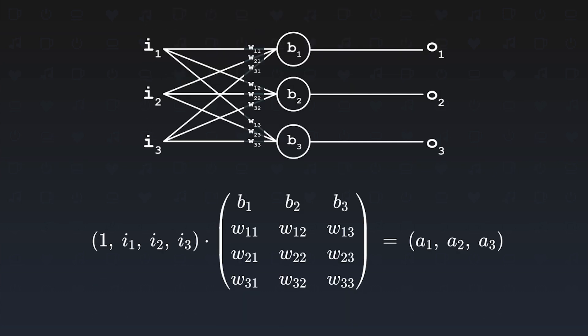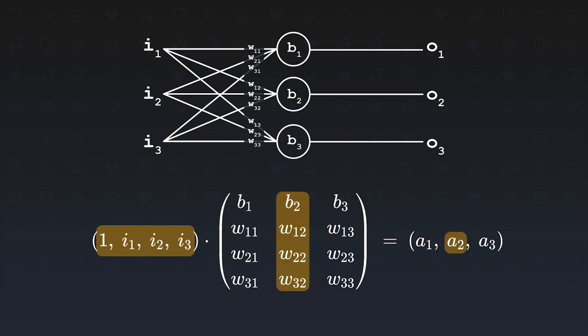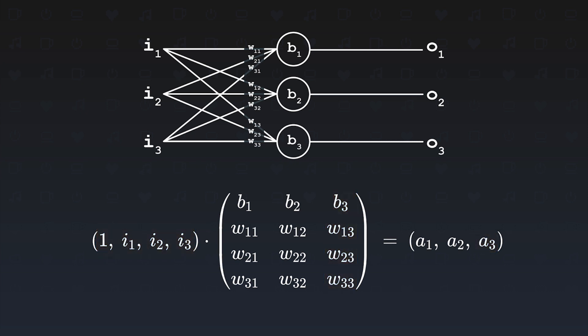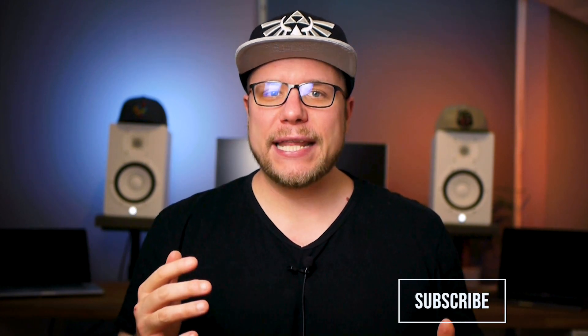And how does this apply to our layer of neurons? On one hand we have the input; on the other we have our matrix of weights and biases. We multiply this row of inputs with the first column in our matrix — neuron 1 — then with the second column, neuron 2, and finally with the third column, neuron 3. We have our activation values for all neurons, and this time everything is stored in one vector. There will be more about neural nets in the future, so hit the subscribe button.